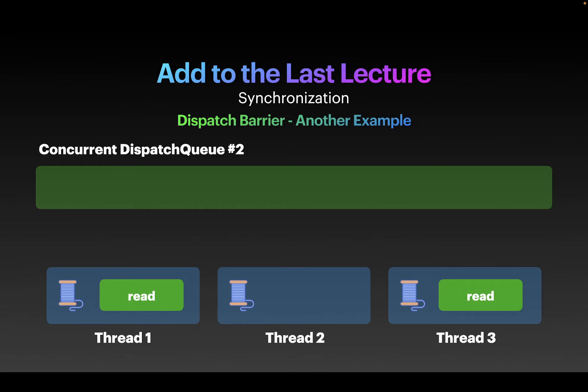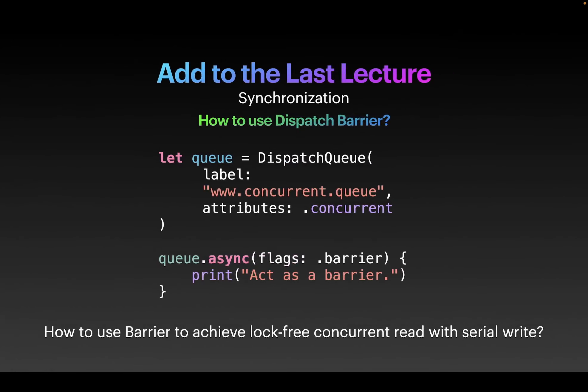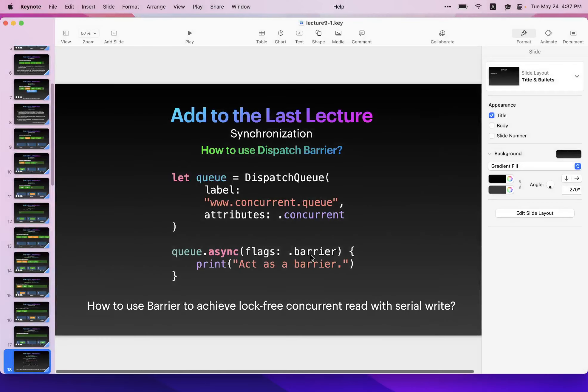Now let's look at the syntax for using the barrier feature. The async call can take a flags argument. In this case, you pass the barrier flag. There are other flags available — you can explore them in the documentation — but today we're just talking about barrier. This is how you create a barrier block. Let's use this concept to achieve lock-free concurrent read with serial write.